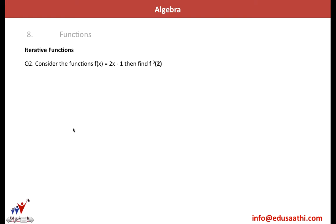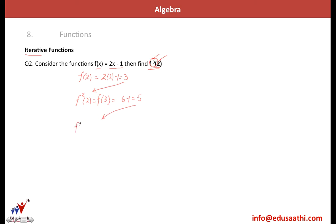Let's look at the second question. We have to find the value of f(3, 2) — an iterative function, meaning the same function is performed three times. The function is 2x − 1 with initial input 2. Computing once: 2(2) − 1 = 3. The output of iteration 1 becomes the input for iteration 2: 2(3) − 1 = 5. Then f(3, 2) = f(5) = 2(5) − 1 = 10 − 1 = 9.